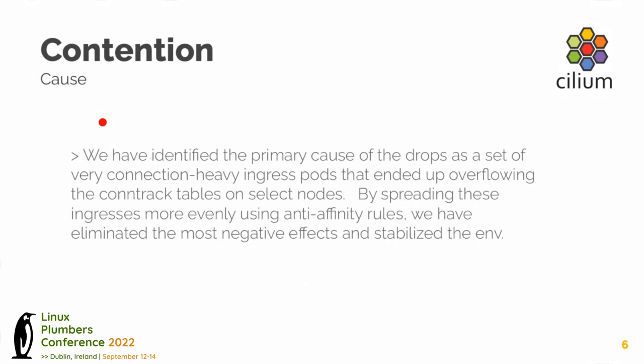When we dug into the particular incident, we identified that during the upgrade, the pods handling ingress traffic toward the cluster had no scheduling rules, so they all ended up on the same node. All of a sudden you have a much higher connection rate on that particular node, even though previously it was supporting that connection load spread across the entire cluster. We ended up spreading those pods around the cluster to lower the per-node impact below the threshold where the data path could handle it. The other mitigation is sizing the map appropriately for the load you're putting on it.